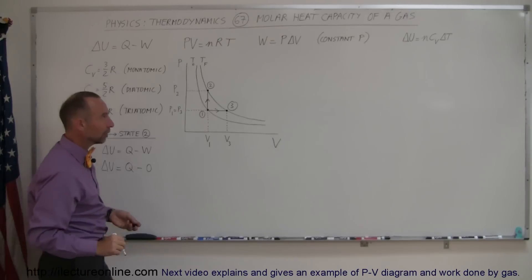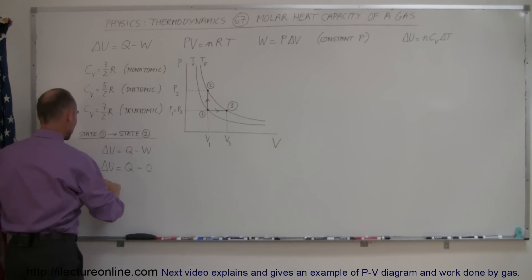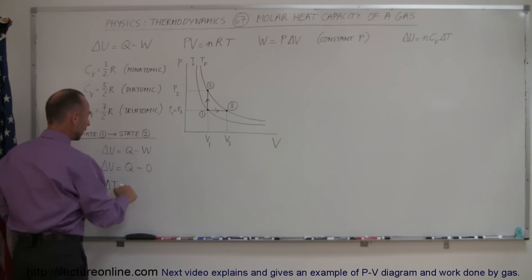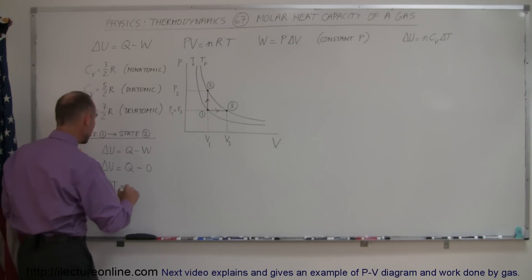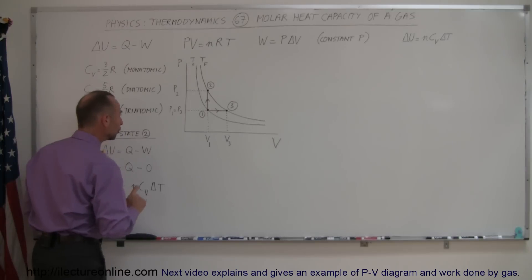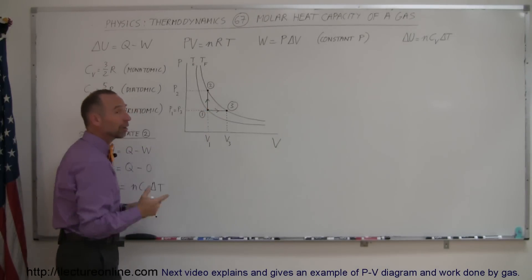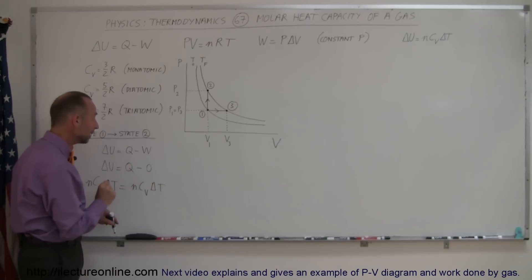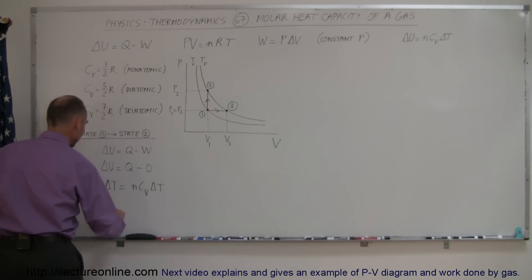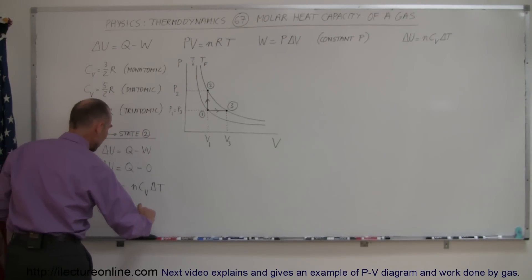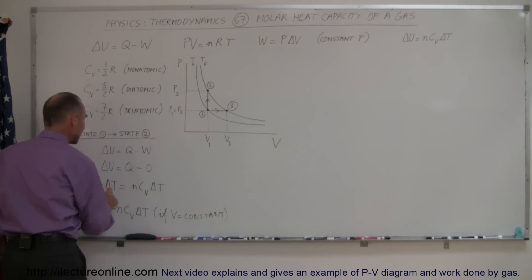We know that delta U is always equal to N C sub V delta T, so when we plug that in, we have N C sub V delta T equal to Q. Since delta U equals N C sub V delta T, Q must also equal N C sub V delta T. Notice that C sub V means the volume didn't change, and going from state one to state two the volume indeed did not change. Conclusion: Q equals N C sub V delta T if the volume is constant, and so we use C sub V in that circumstance.